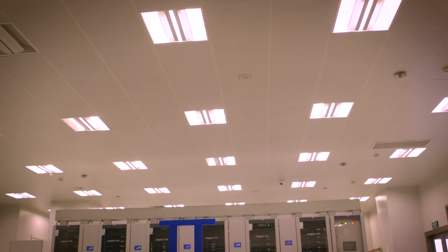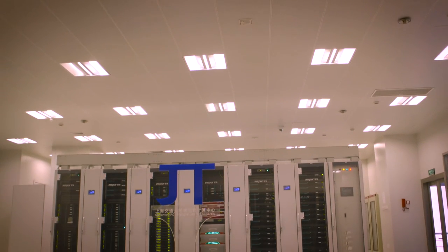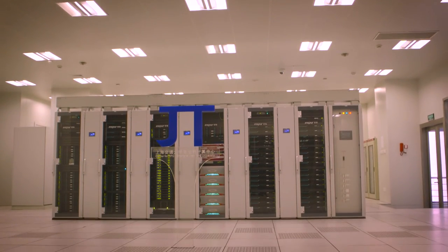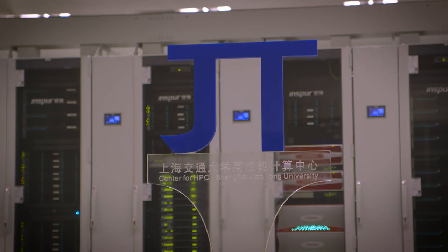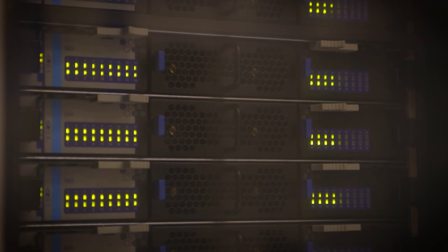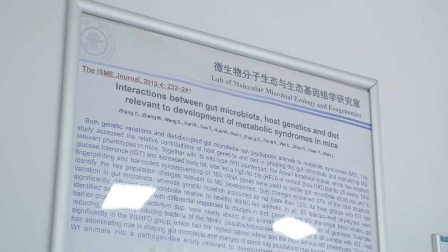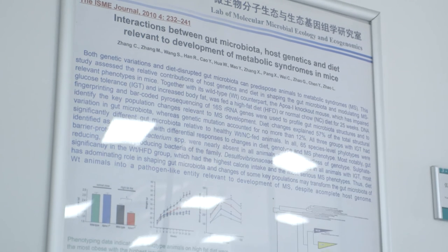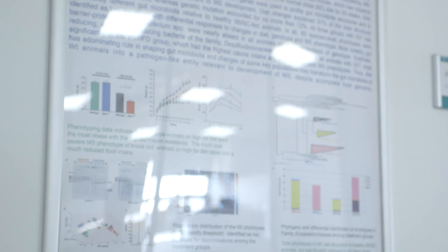In our school, we have the State Key Lab of Microbiome Metabolism, which means there are a lot of advanced technologies here for our research. Our research is based on massive data, usually terabyte size. Down here, we are in the high-performance computing centre of Shanghai Jiao Tong University. The cluster, named Pi, is number one in the China Ministry of Education, and its speed is up to 380 teraflops.